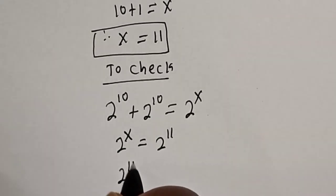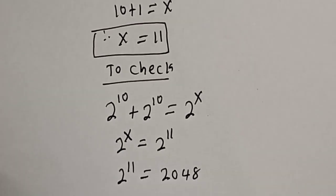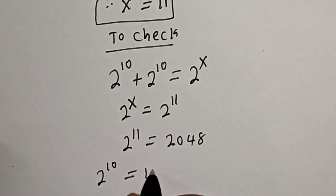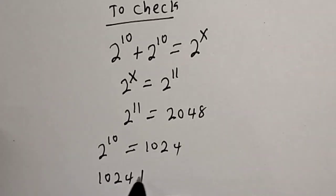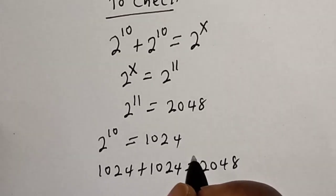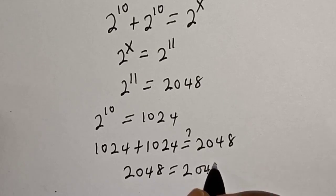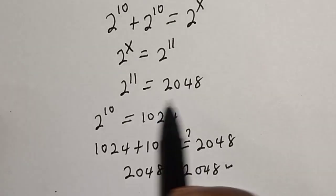Now 2 raised to power 11 is equal to 2048, and 2 raised to power 10 is equal to 1024. Substituting: 1024 plus 1024 must equal 2048. Adding these together, 2048 is equal to 2048 — we satisfy the given equation at x is equal to 11.